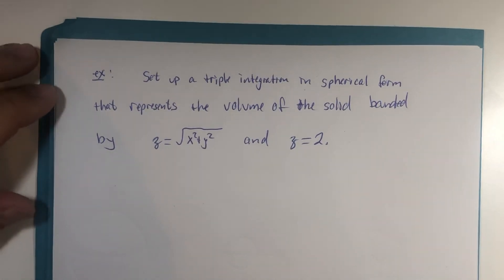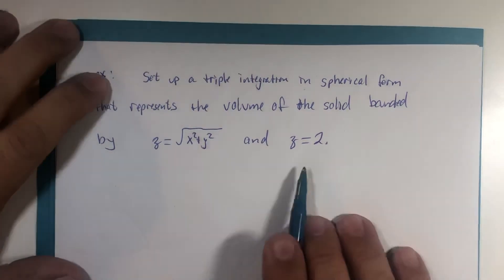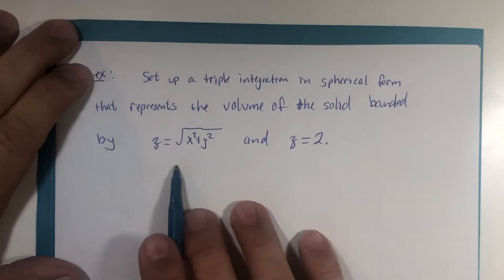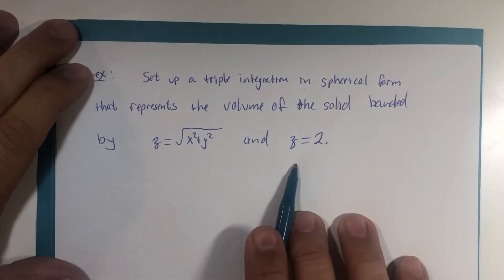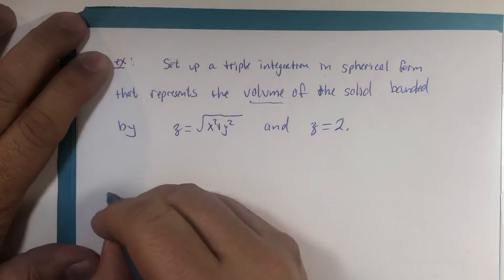What if the cap wasn't a sphere, but a horizontal plane z equals 2? We have a cone and we have z equals 2. And we're just going to find volume in this case. So if I have a cone...